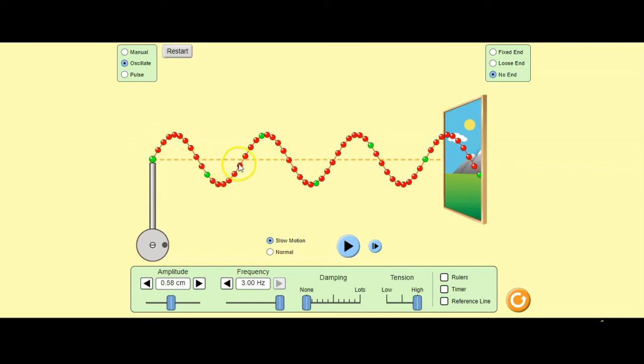You have one full wave, two full waves, three full waves. So at a frequency of three hertz from this distance to this distance you are able to see three full waves. Now if I lower the frequency.